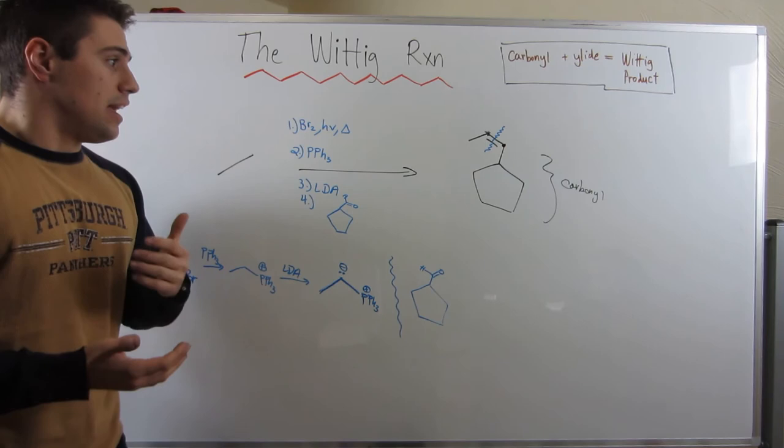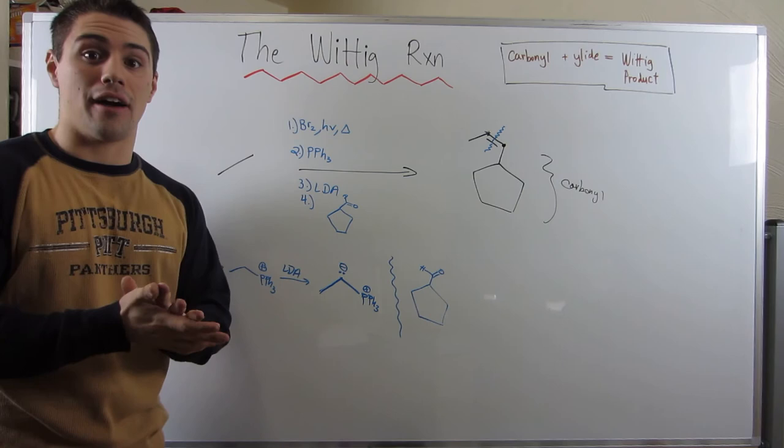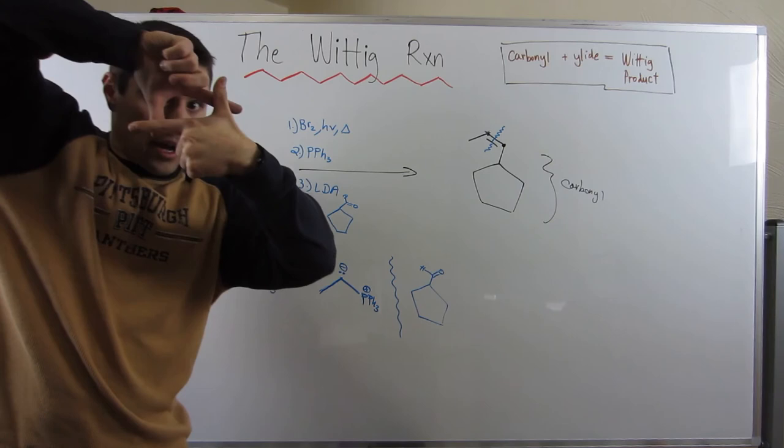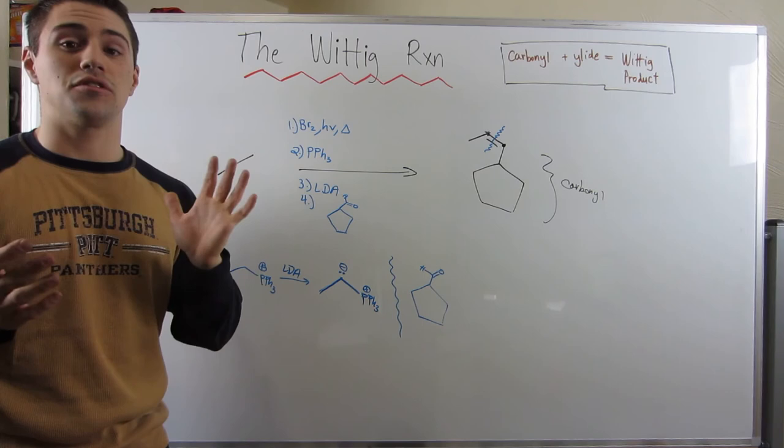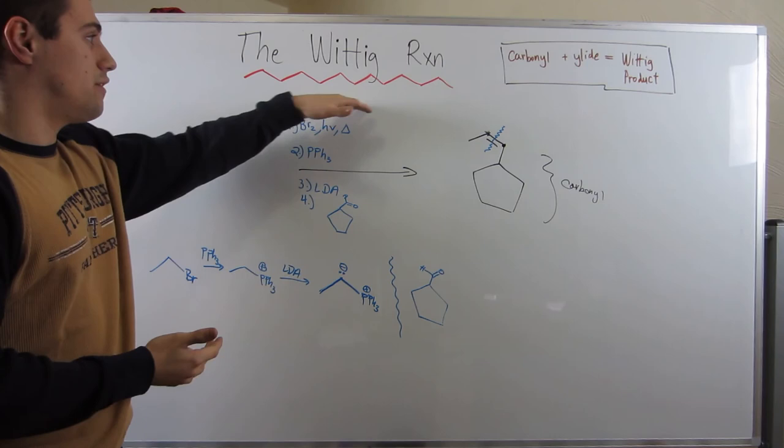Remember, if you're given the two precursors, if you're given your ylid and your carbonyl, remember, draw the arrows from the negative carbon, the carbanion, to the carbonyl carbon, and have them attached there. Then have your oxygen attached to the phosphorus, form your square intermediate, and then make sure phosphorus leaves the bond with oxygen, and then you form this cis double bond.